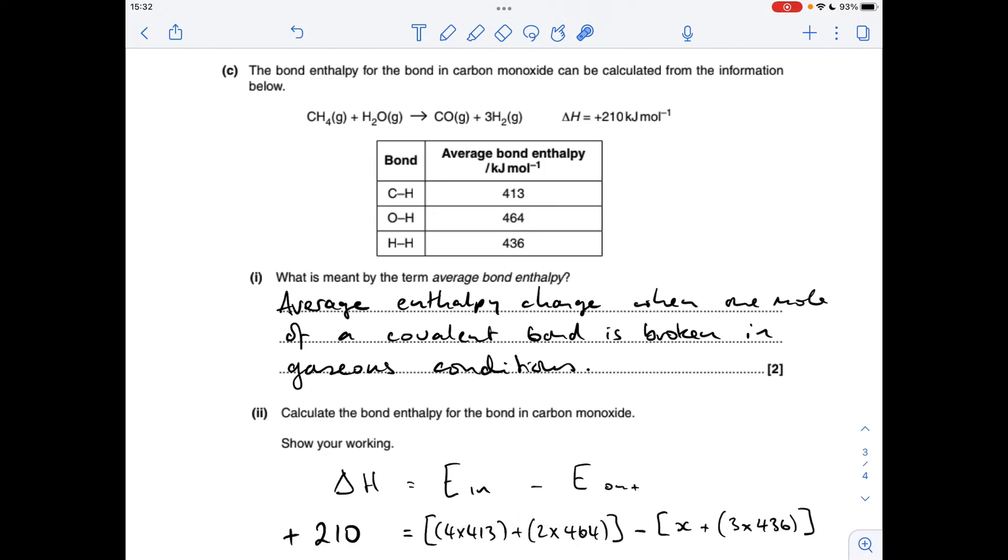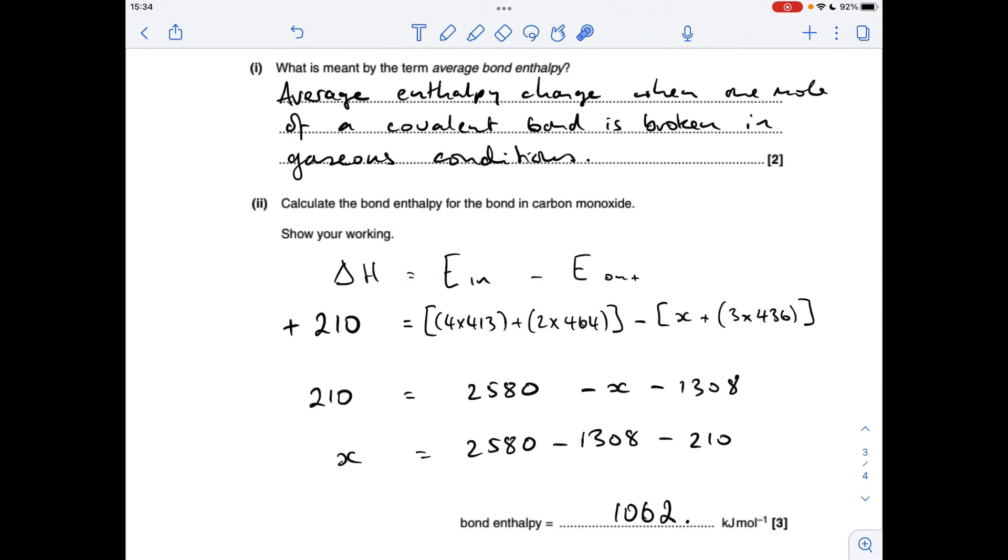So that's the total energy in minus, remember the energy that comes out when you make these bonds. So there's the unknown one, the bond enthalpy for carbon monoxide, plus we're making three moles of hydrogen. So we're going to get out three times 436. So when you solve for X, you get a value for the bond in carbon monoxide at 1062 kilojoules per mole.